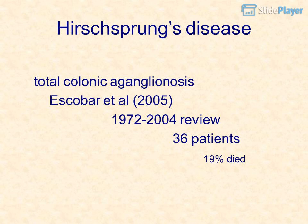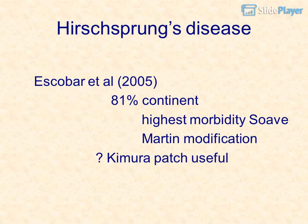Total colonic aganglionosis — Escobar et al., 2005: 1972–2004 review, 36 patients, 19% died. Of survivors, 81% continent. Highest morbidity with Soave. Martin modification and Kimura-Pachyus procedure also used.